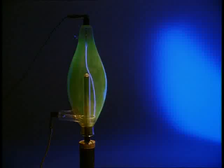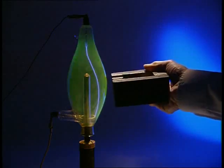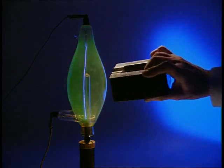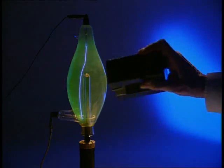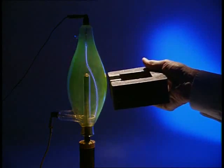See what happens when a magnet is placed nearby. Because electrons are charged, their path can be deflected by a magnetic field. The same would happen with beta radiation.